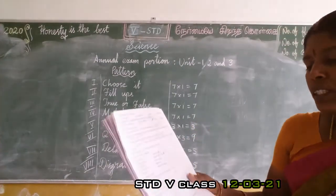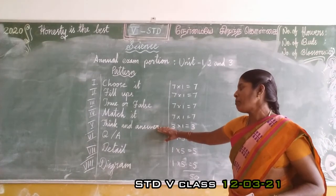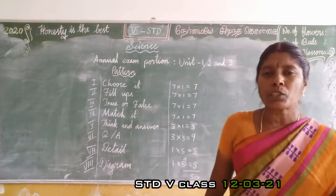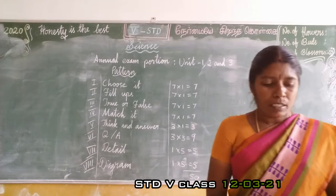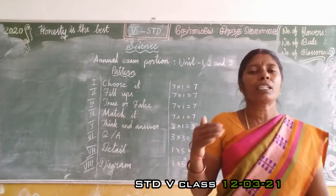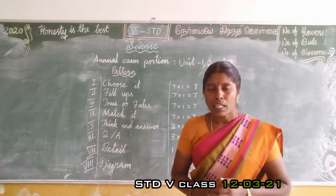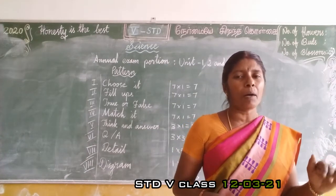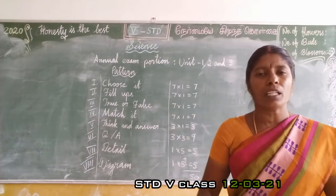Higher order thinking - think and answer section. If there is no atmosphere, what will be the condition of the earth? Answer: No organisms will live on earth. Then, give some suggestions to prevent air pollution - for example, use public transport for travelling, use a bicycle to go to nearby places.